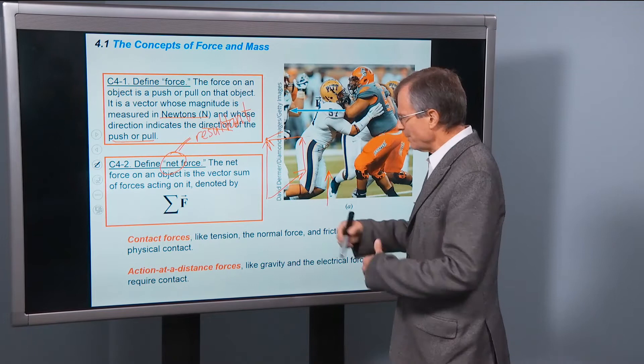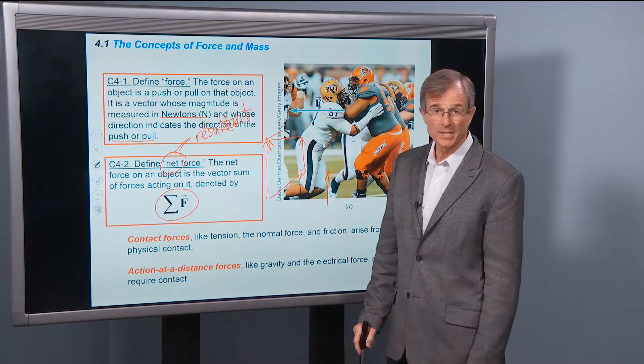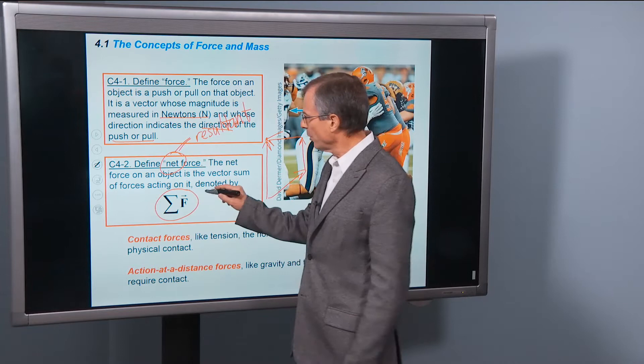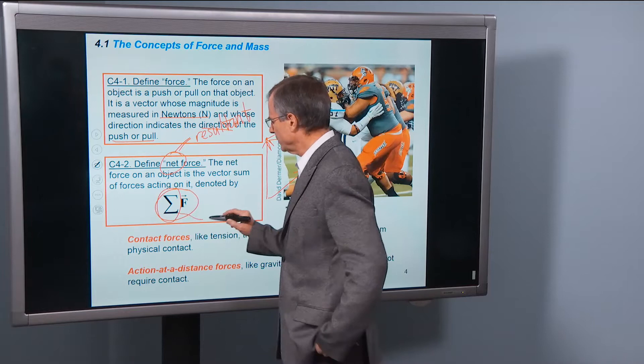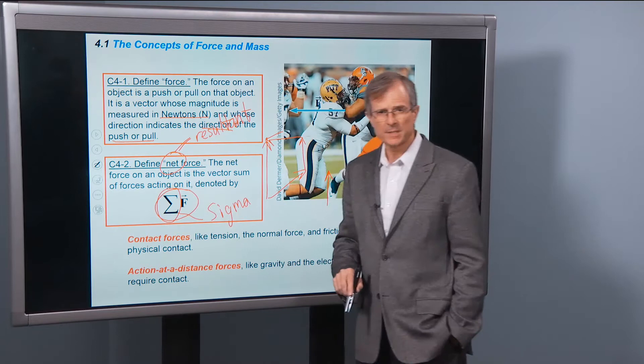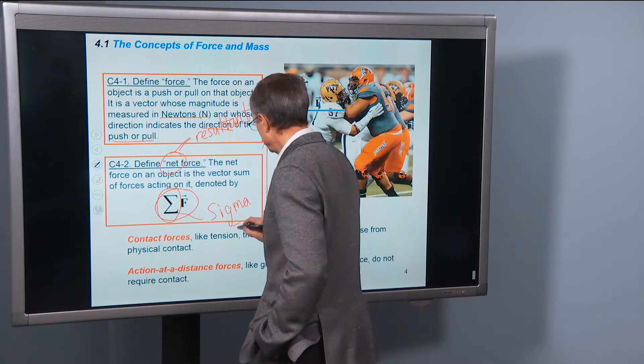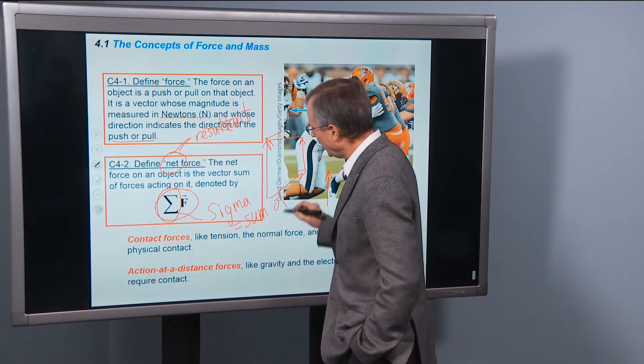And it's the vector sum of all of the forces, and it's denoted by this combination of symbols. The boldface F with an arrow over the top, that means force. And this symbol here is a Greek letter, it's a capital sigma. And normally in physics, that symbol is used to represent sum of.